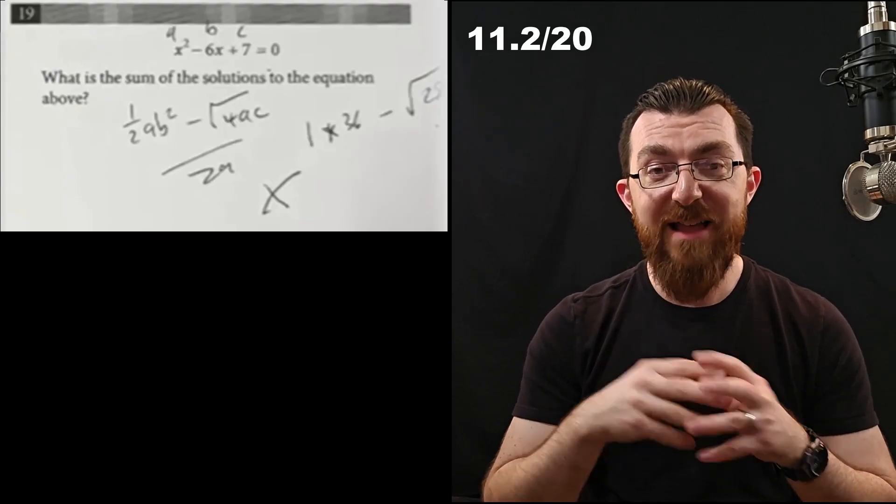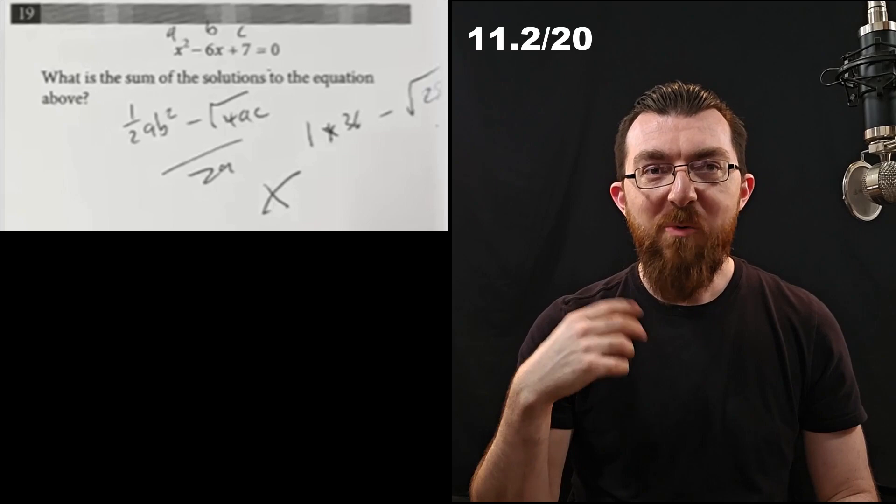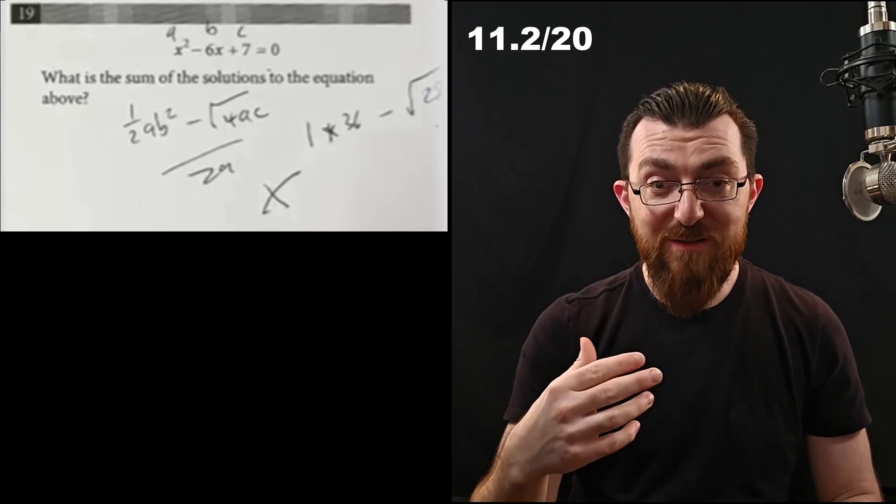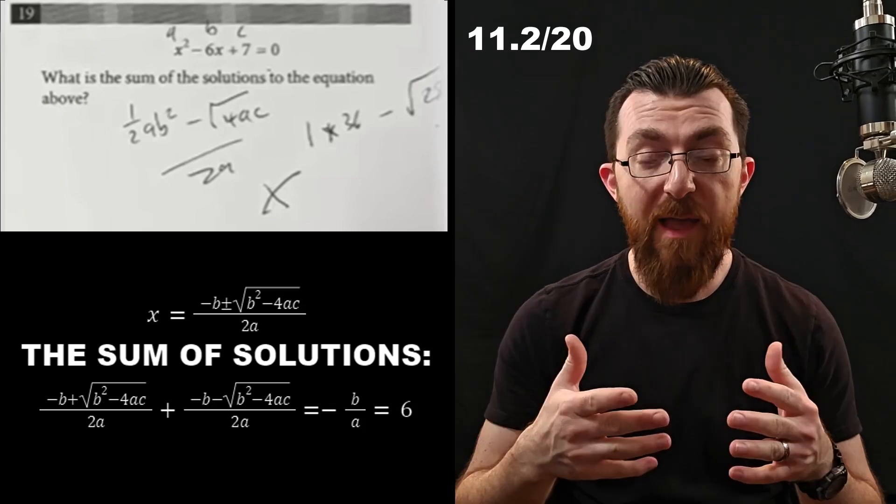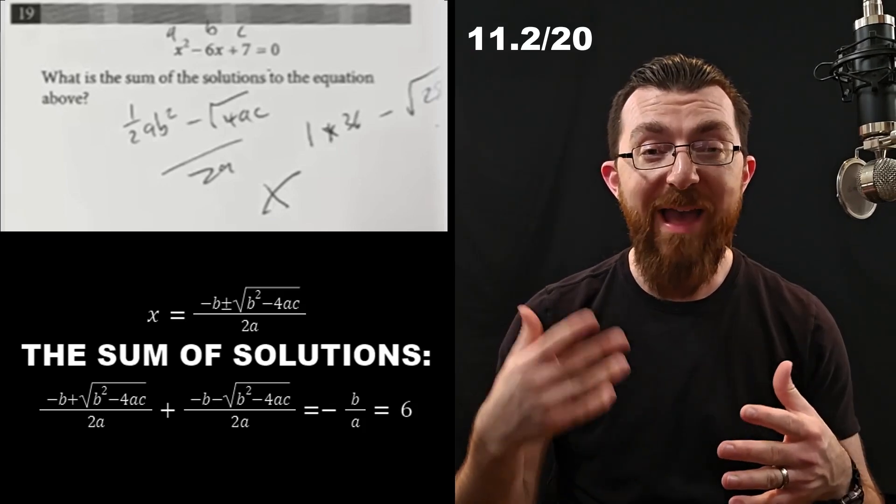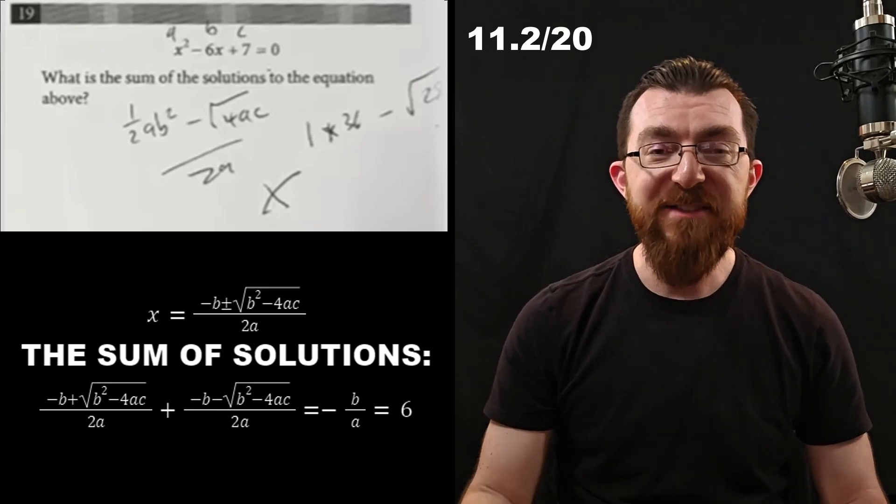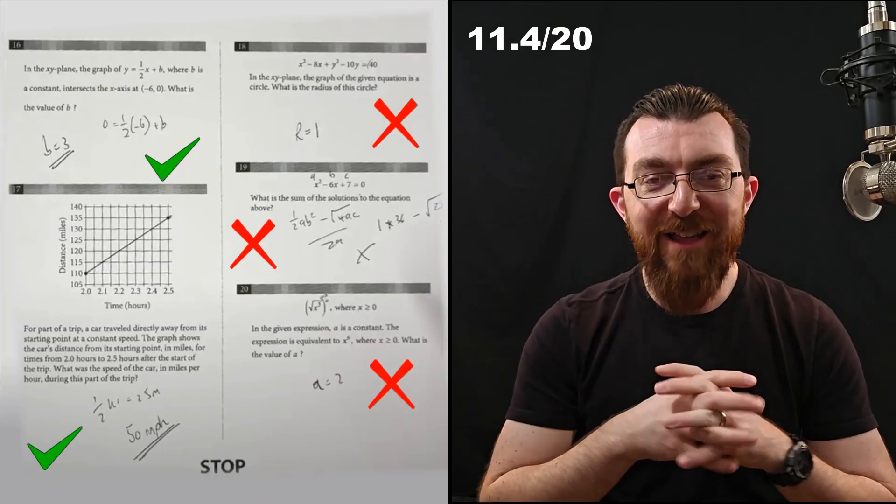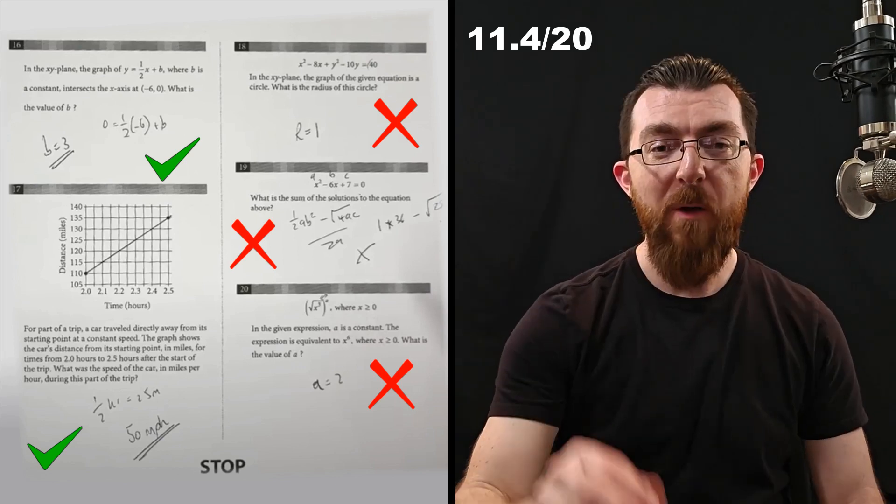Okay, so the next question is actually kind of annoyingly simple, because when you add the solutions to the quadratic equation, the plus and the minus cancel out. And you've got negative b over 2a twice. In other words, negative b over a, which in this case is 6. Unfortunately, I can't give Dan a lot of partial credit here, because he didn't get the quadratic formula right.